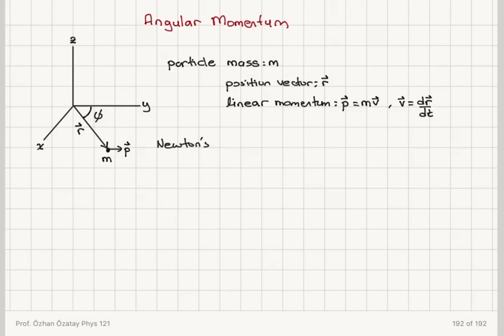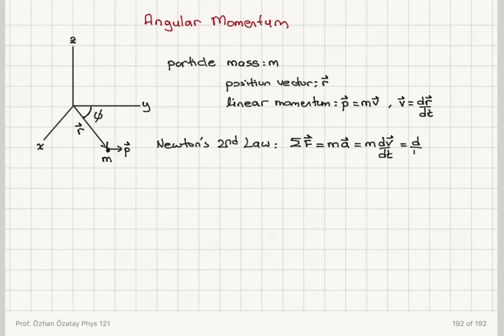Now, what do we know about the linear momentum of a particle using Newton's second law? Looking at the motion of this particle from an inertial reference frame, the net force — the sum of all forces acting on the particle — is mass times acceleration, which is mass times dv/dt.